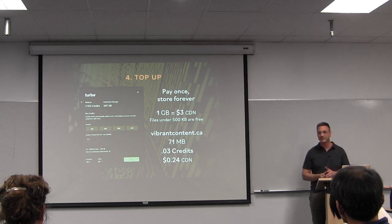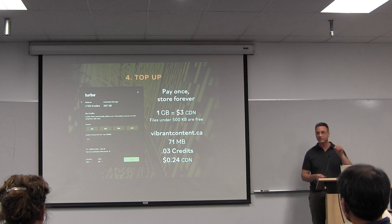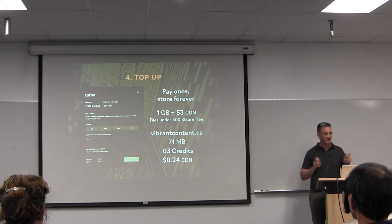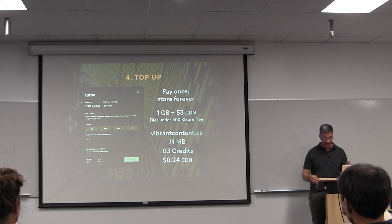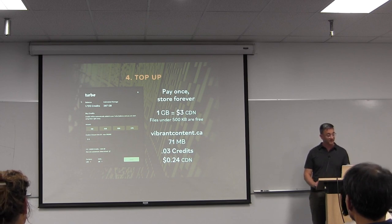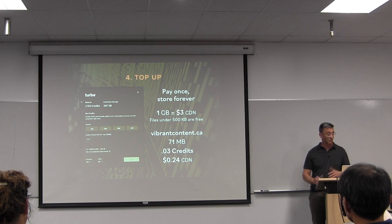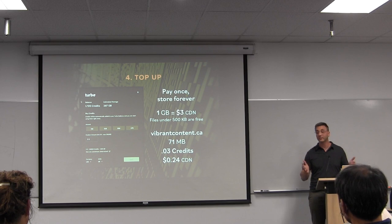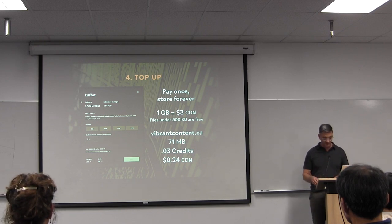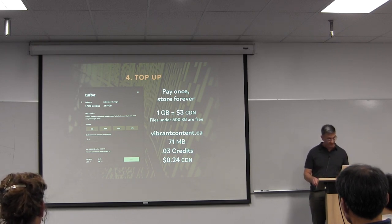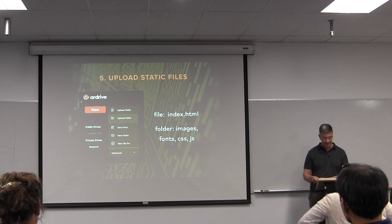Fourth: top up. Until about two months ago you had to have the AR native token to put anything on the permanent web. That's changed — you can now use a credit card, with a minimum spend of about five dollars. As an example, the site I did: you get about a gigabyte for $3 Canadian, my static files were 71 megabytes, and it cost 0.03 credits — 24 cents. So you need to feed the machine, but you no longer have to find a crypto exchange for this token.